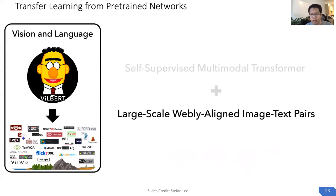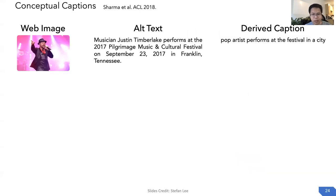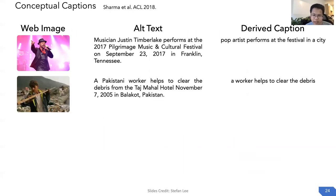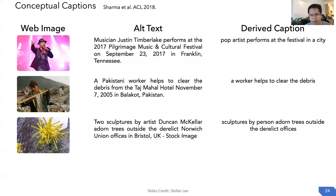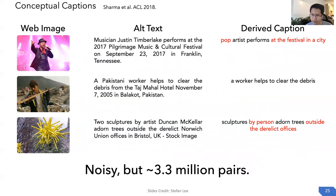We use large-scale webly-aligned image-text pairs as pre-training data. In this work, we use Conceptual Captions, which is automatically converted from alt-text to captions. For example, given an image the caption might be 'pop artist performs at a festival in a city,' or 'a worker helps to clean the debris.' Since it's automatically converted from alt-text, the captions are noisy, but we have around 3.3 billion pairs, which is an order of magnitude larger than curated datasets.